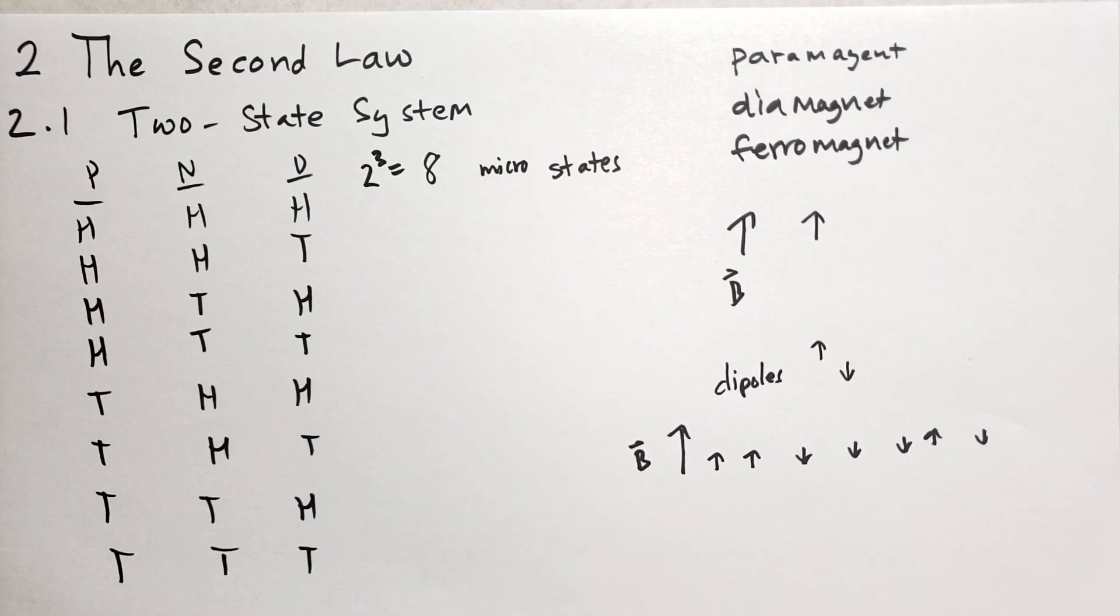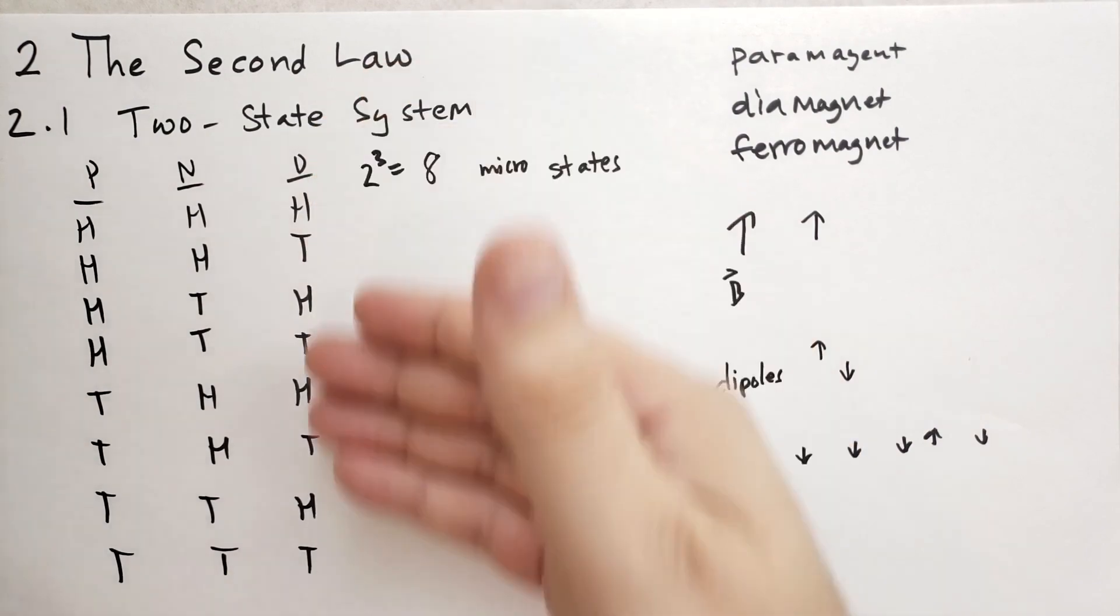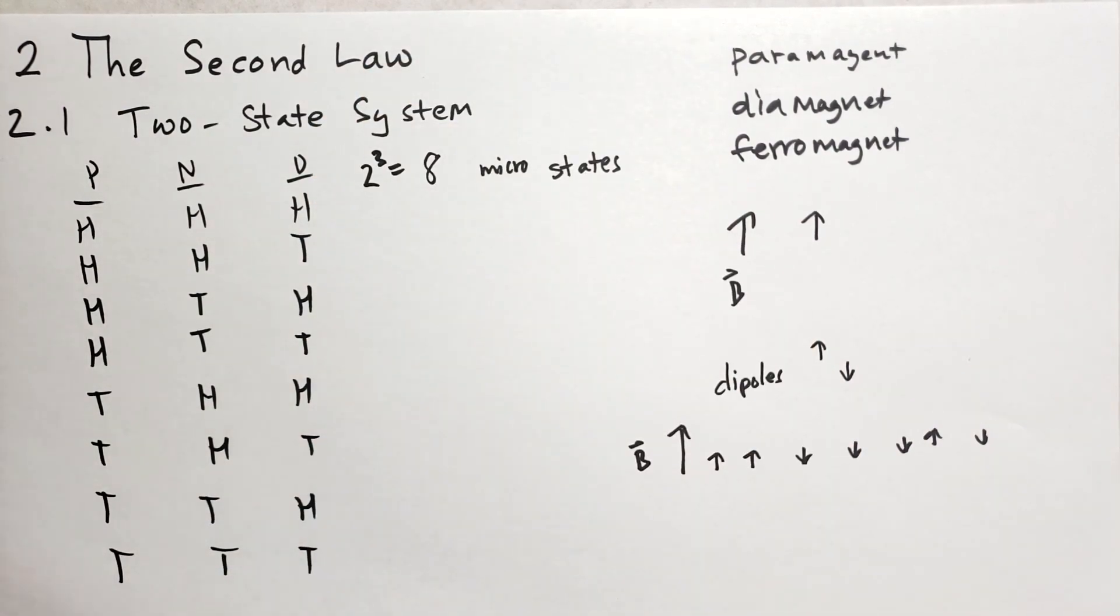Now obviously when we start talking about Avogadro's number of particles, and we talk about very large numbers of quantum states that these things can take on, then the number of microstates are going to get absolutely terrifyingly huge. And we'll talk about how to deal with those numbers later on. But for now, we have eight microstates here.